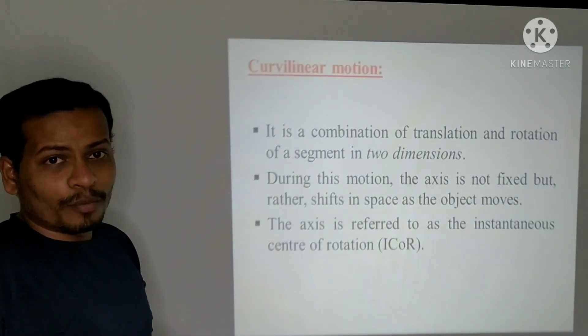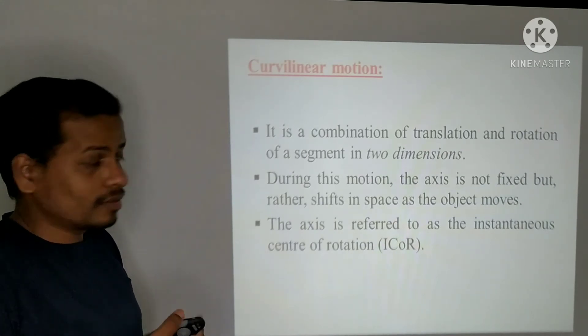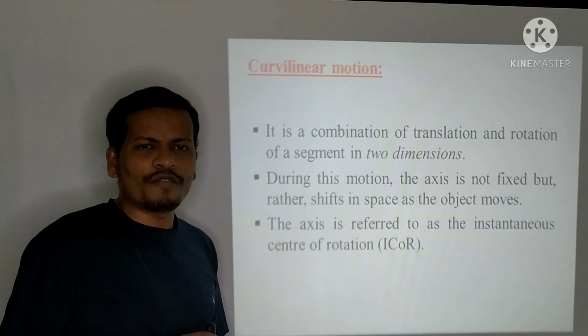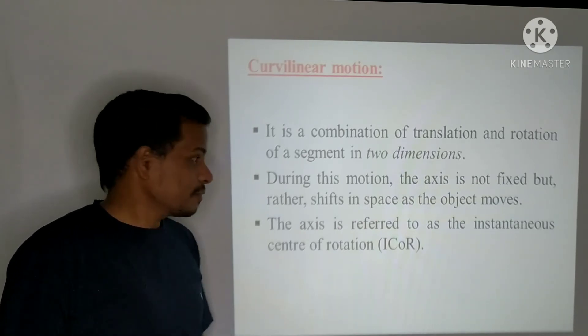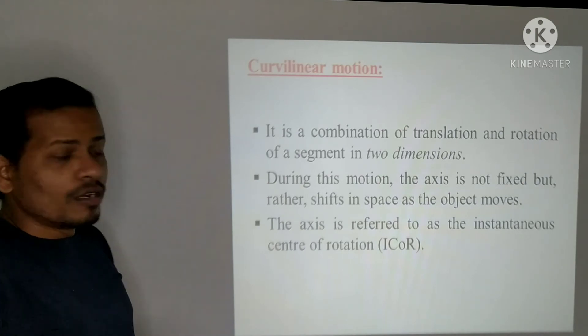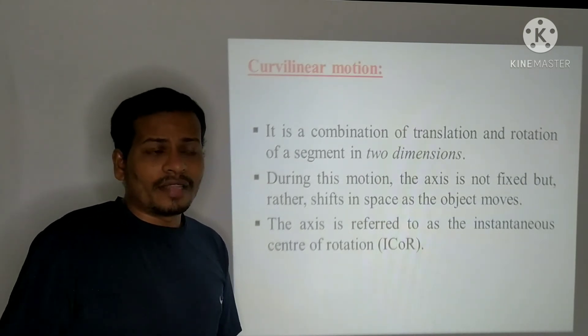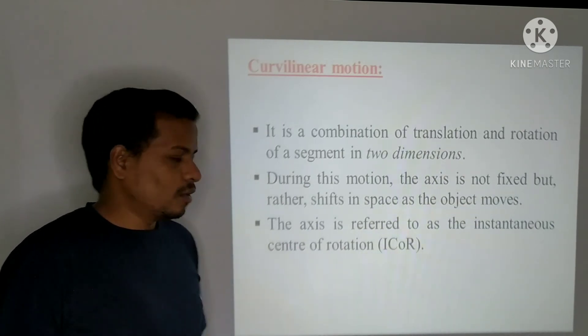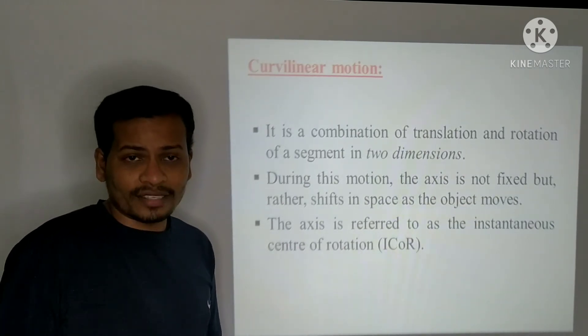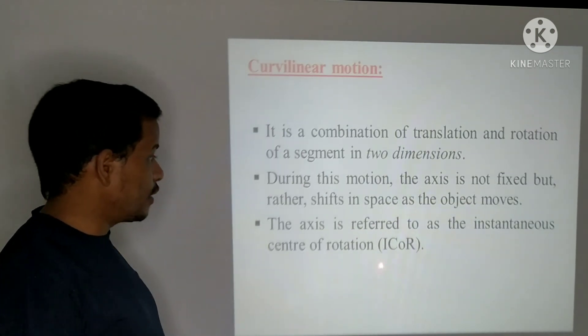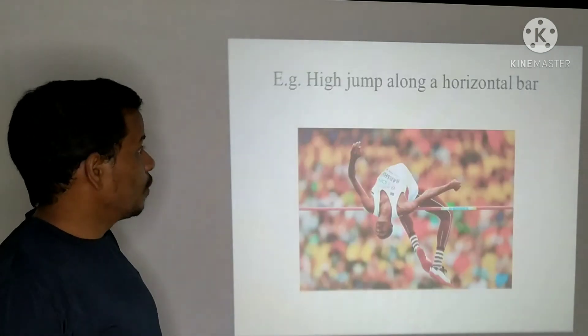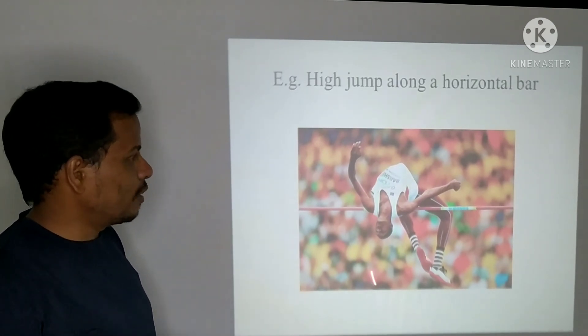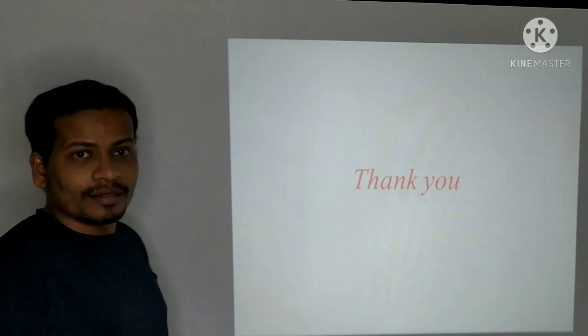This is not a common motion which is known as a curvilinear motion. A curvilinear motion is a combination of translatory and rotatory motions which occurs in two dimensions. During this motion, the axis in a curvilinear motion is not fixed, it keeps on shifting. That axis is referred to as instantaneous center of rotation which is denoted as ICOR. This is the example of a high jump athlete along a horizontal bar. Thank you guys.